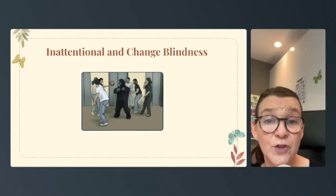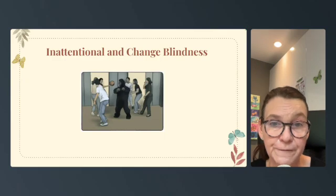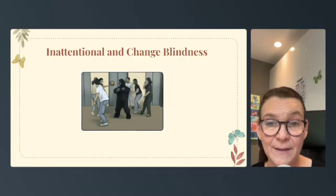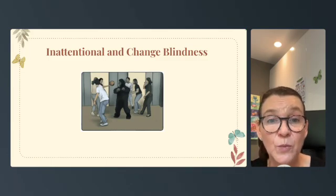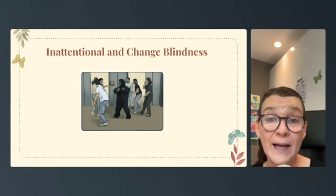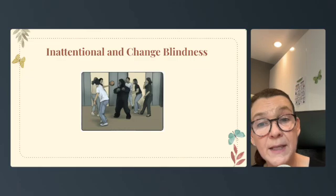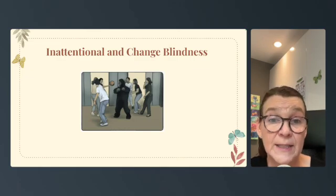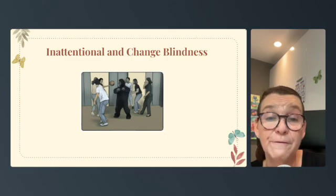A scenario illustrating inattentional blindness involves a pedestrian walking down a busy street while focused on texting. As they approach a crosswalk, a cyclist quickly rides past, narrowly avoiding a collision. Despite the cyclist passing very close by, the pedestrian fails to notice because their attention was completely absorbed by their phone. This highlights inattentional blindness — the pedestrian's focus on their phone causes them to miss significant, potentially dangerous events happening right in front of them.